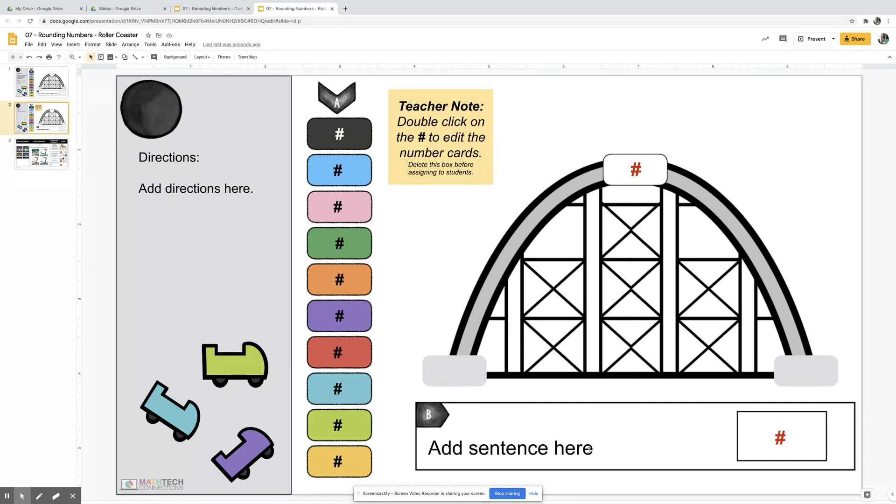to round to the nearest ten or even with decimals. The first one is a rounding rollercoaster where students find the endpoints, midpoint, and then use the little visual cards to decide if it's going to round up or down.